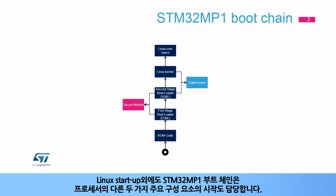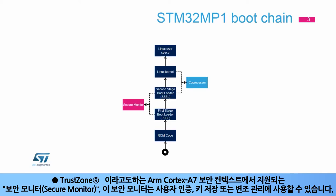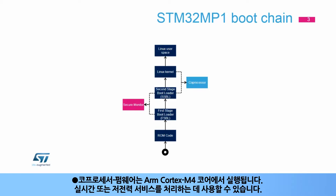Beyond Linux startup, the STM32MP1 boot chain is also responsible for the startup of two other major components of the processor. The secure monitor, supported by the ARM Cortex-A7 Secure Context, also called Trust Zone, can be used for user authentication, key storage, or tampering management. And the co-processor firmware, running on the ARM Cortex-M4 core, can be used to offload real-time or low-power services.